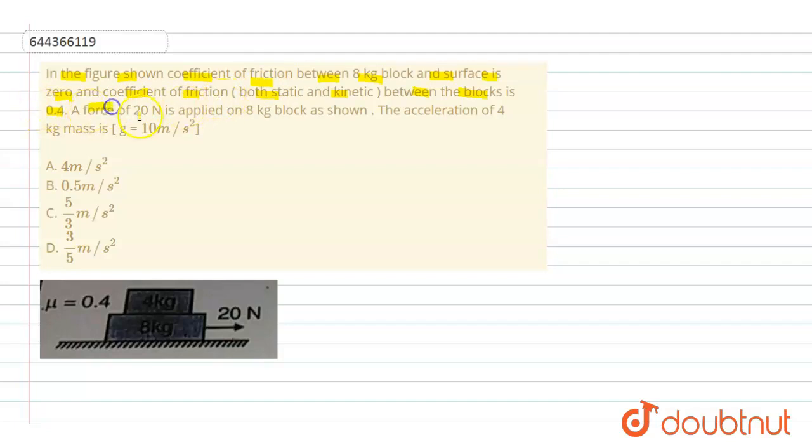A force of 20 newton is applied on the 8 kg block as shown in the figure. We have to tell the acceleration of the 4 kg mass. The value of g is given as 10 meter per second square.